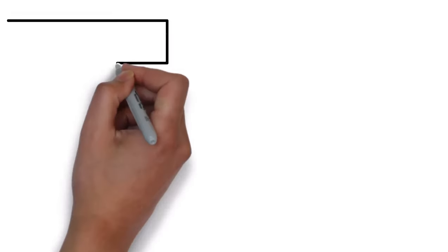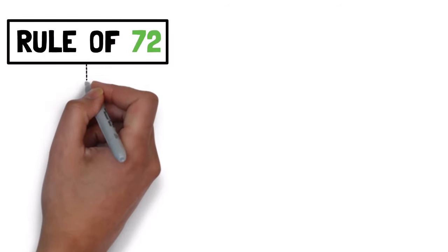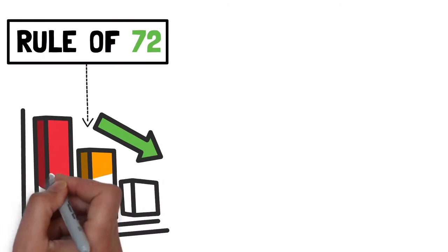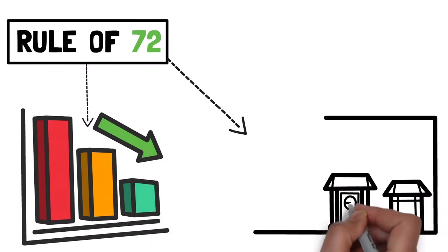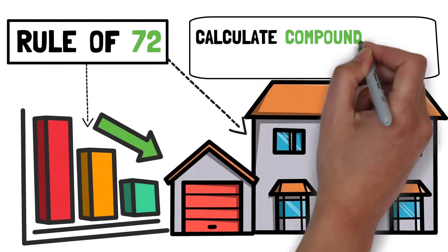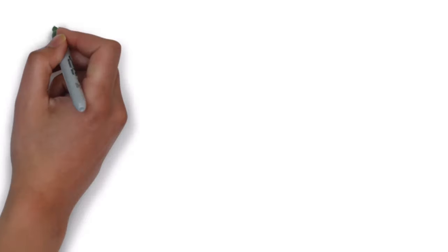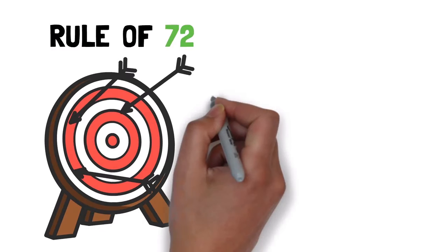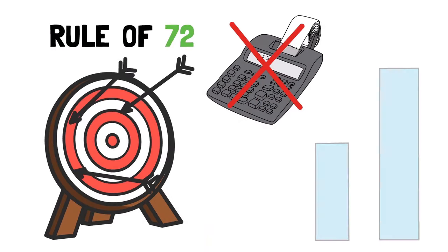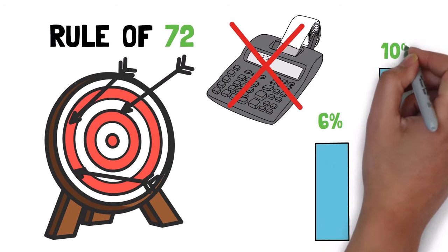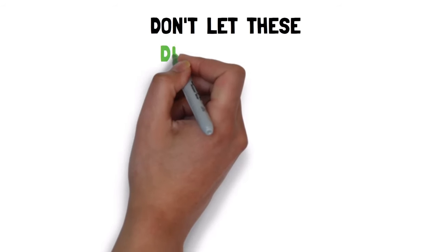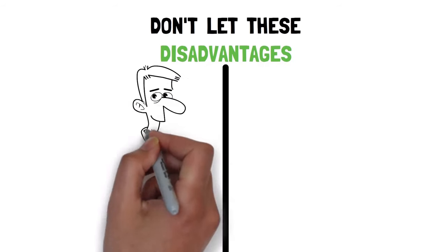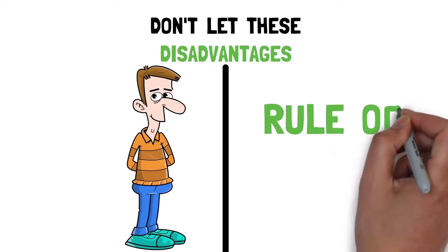All this being said, using this rule also comes with some disadvantages. For example, it can only be used on assets that calculate compound interest on an annual basis. This rule also has some accuracy problems because it can't calculate rates below 6% and above 10% accurately. Nonetheless, don't let these disadvantages drive a wedge between you and the rule of 72.